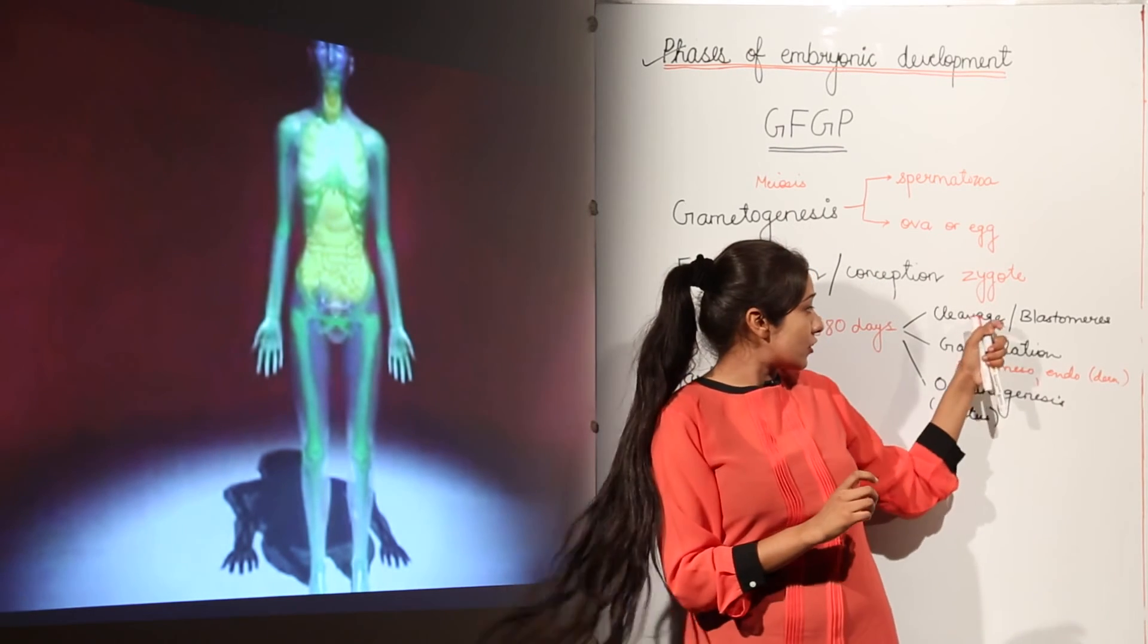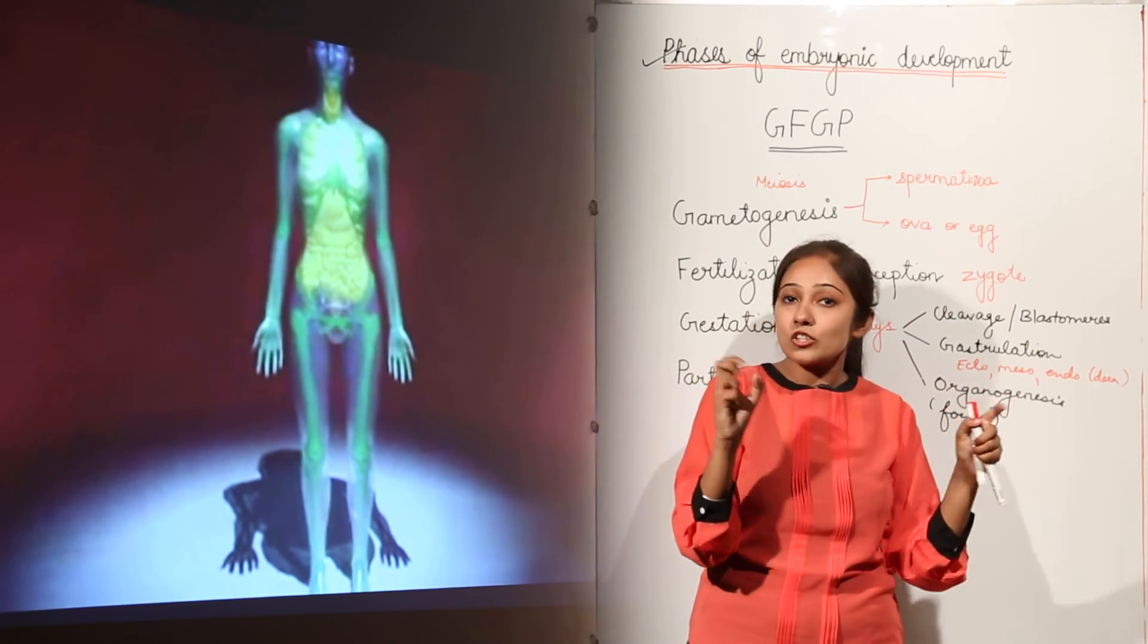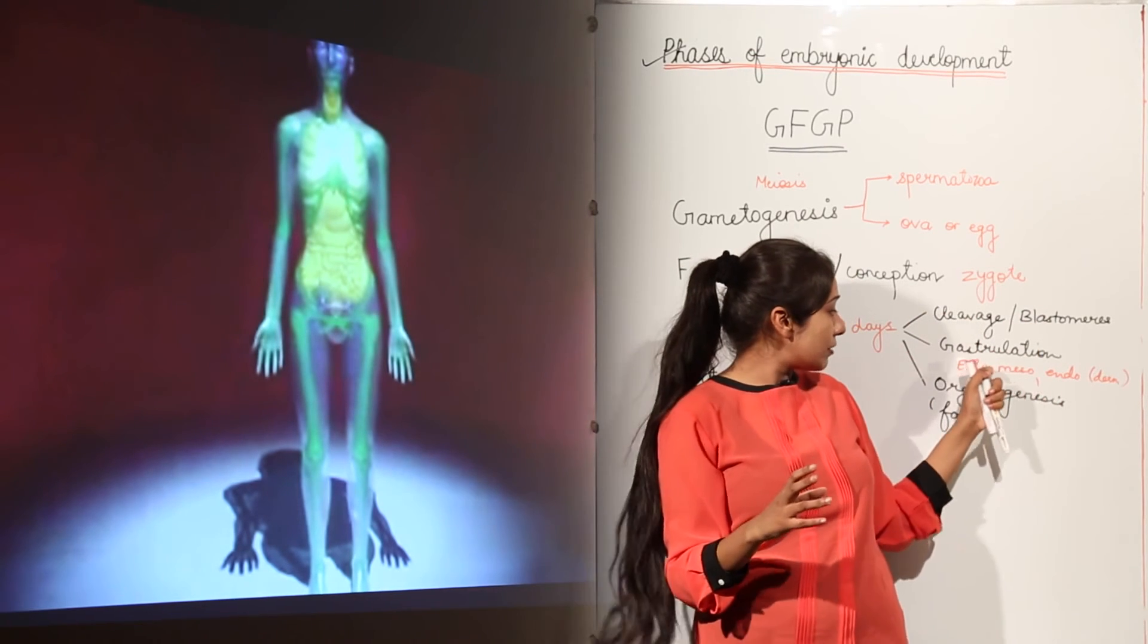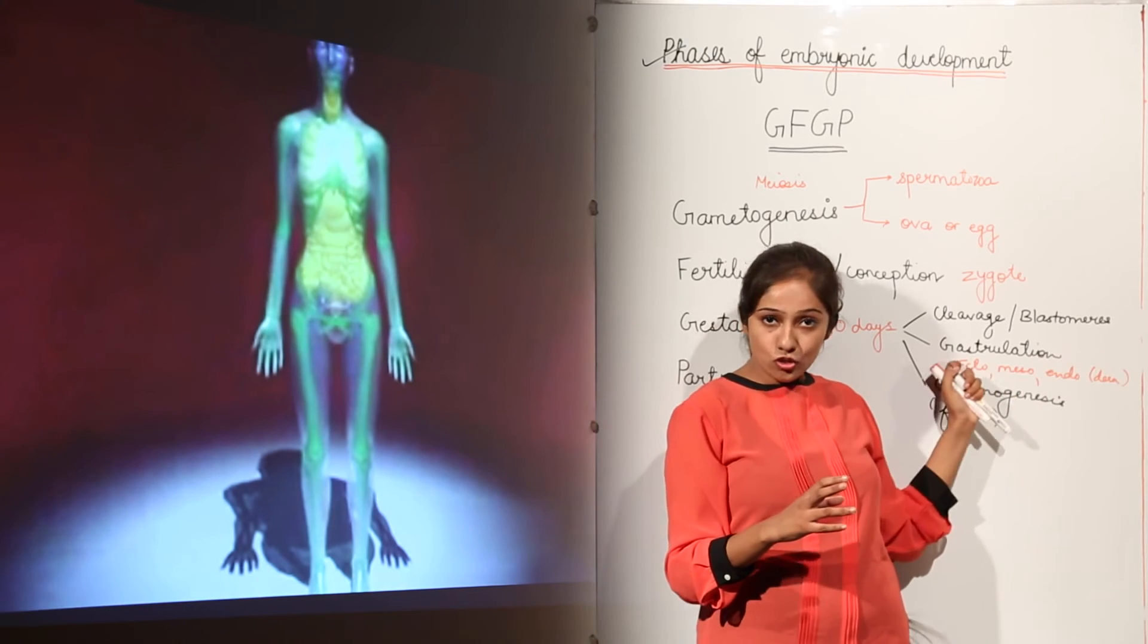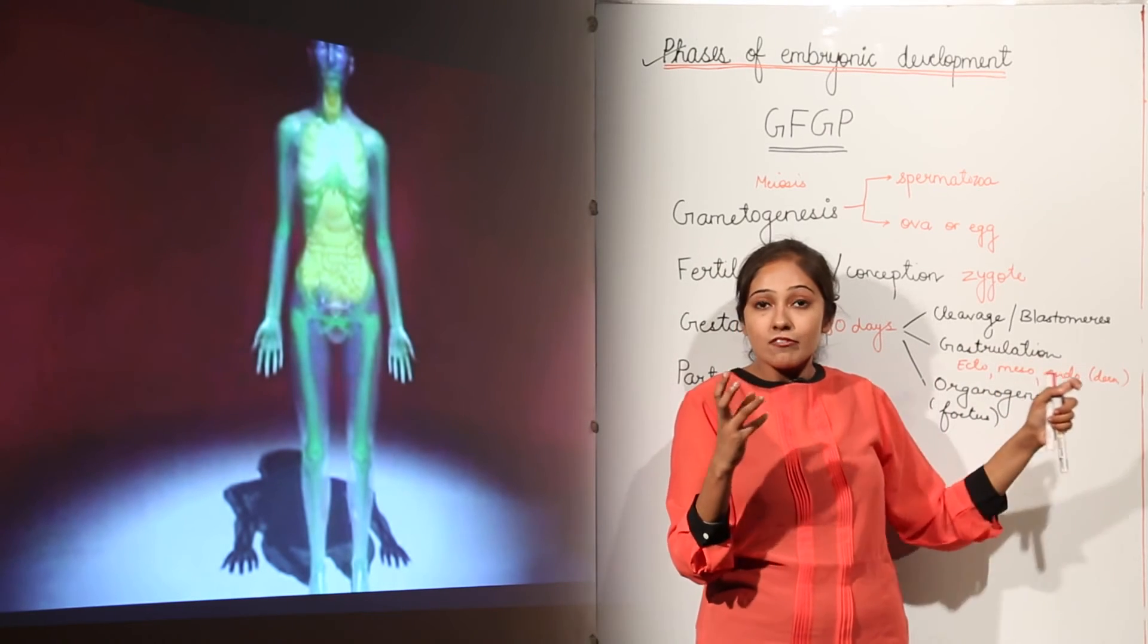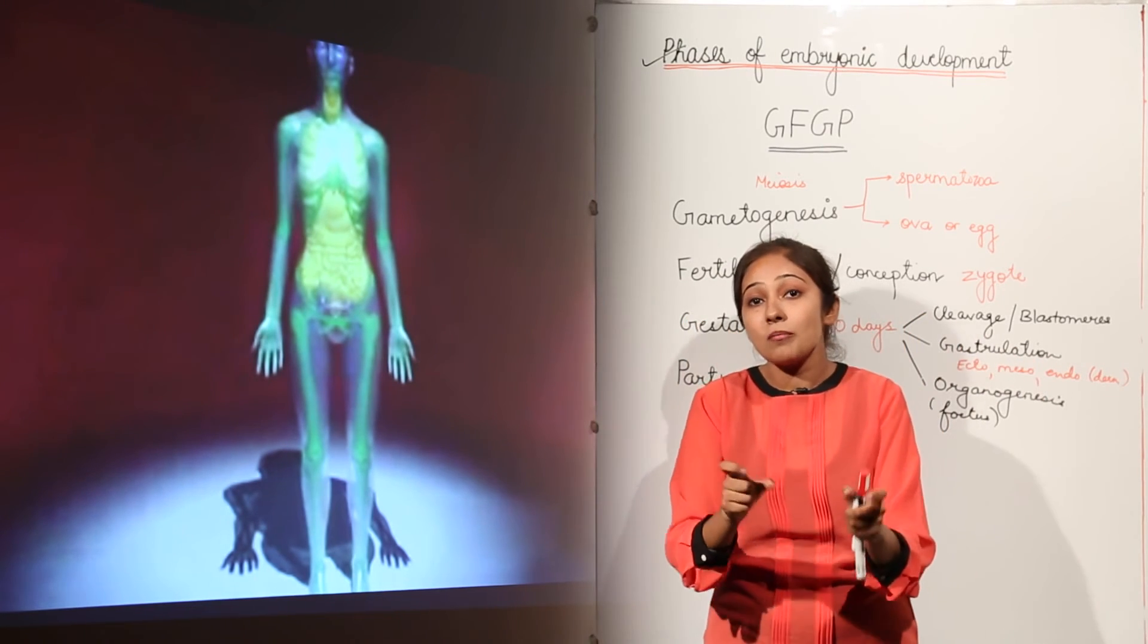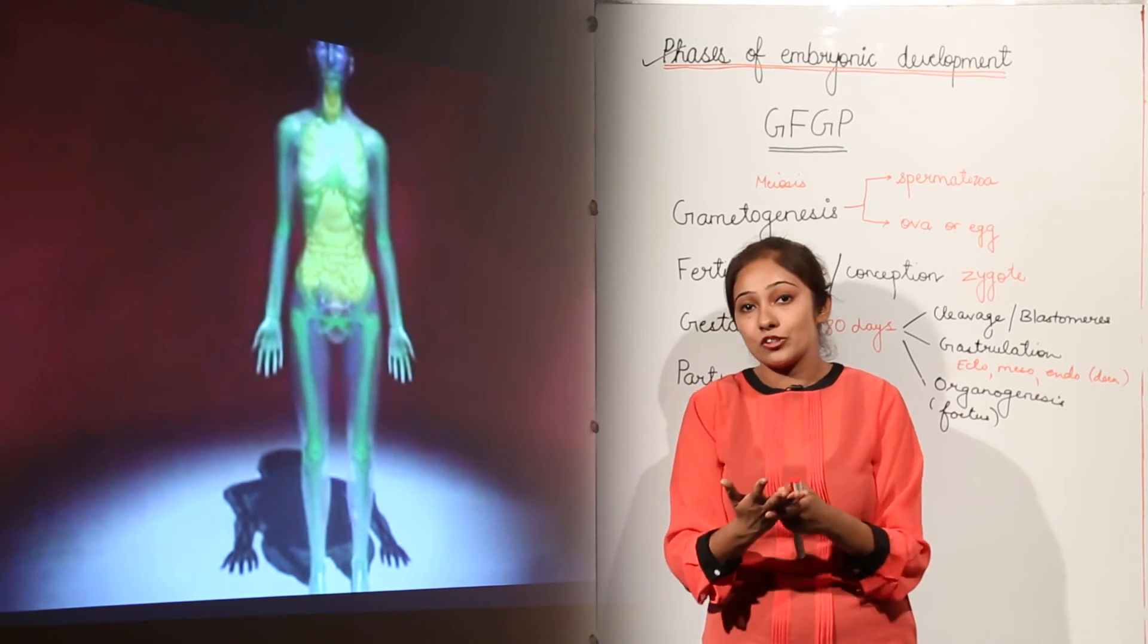Because at this stage, this blastomere stage, this cell differentiation is going to begin. We will be forming three germ layers: ectoderm, mesoderm and endoderm. When these three germ layers are going to form, after this organs are going to form.